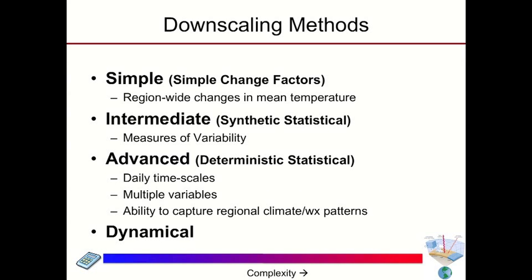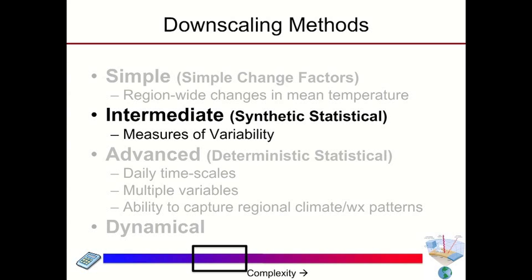We're going to walk through a spectrum of downscaling methods, starting with statistical downscaling methods and moving on to dynamical downscaling methods, starting with the very basic method. We're moving from the type of methods we can do with a calculator — the simple downscaling methods — which basically take into consideration a change in temperature from one period to another, impose that on observed climate, and produce future downscaled climate data sets.